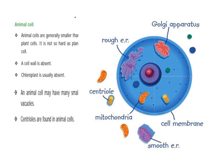Chloroplasts are usually absent in animal cells. Animal cells may have many small vacuoles.